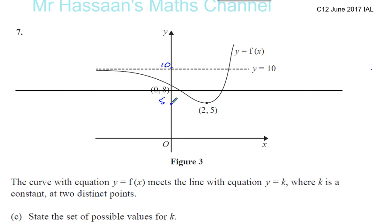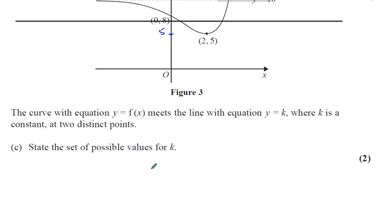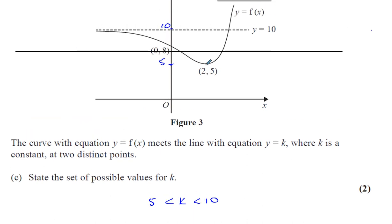So we can say that the set of possible values for K, K must be between 5 and 10, not including 5 and not including 10. If you include 5, there's only one solution, because there will be a tangent at that point. If you include 10, there will be only one solution because this line never touches Y equals 10 on this side, it only touches on that side.